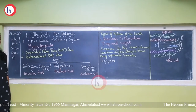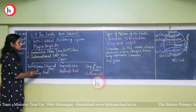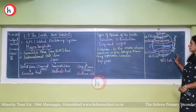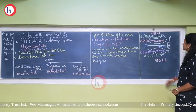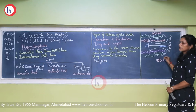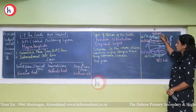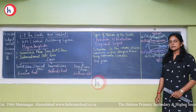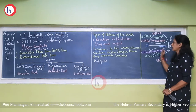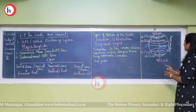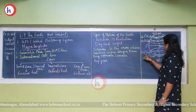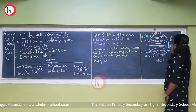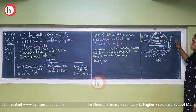Earth is divided into three zones: first is the Torrid Zone, second is the Temperate Zone, and third is the Frigid Zone. The earth is divided into two parts: North Pole and South Pole. The equator is an imaginary line dividing the earth into two equal halves. From 23.5 degrees south latitude to 23.5 degrees north latitude, these regions come in the Tropical Zone.